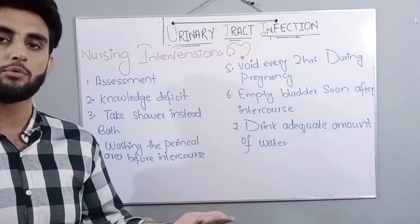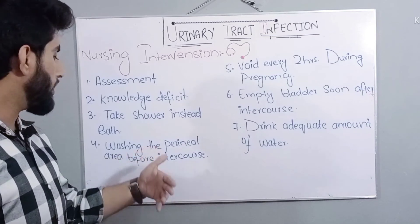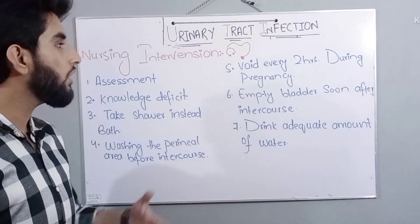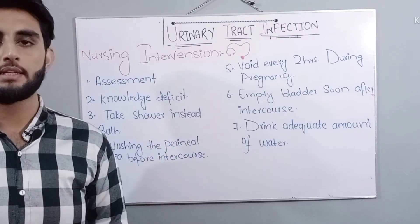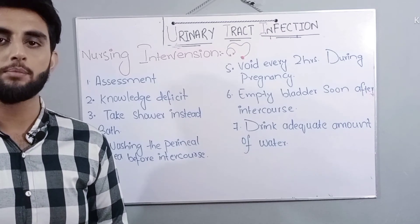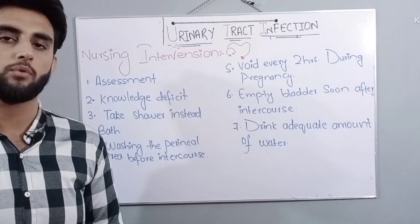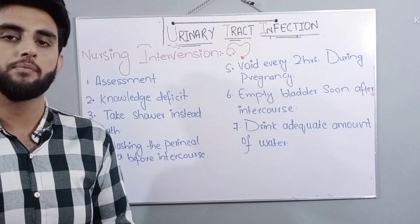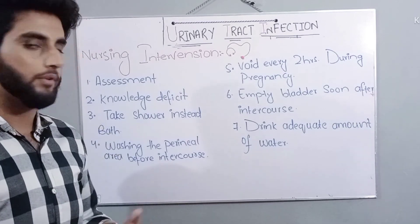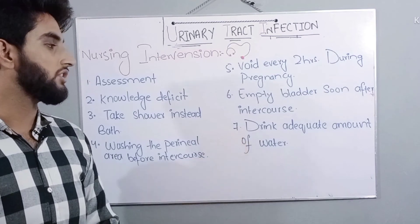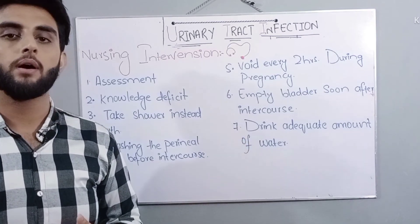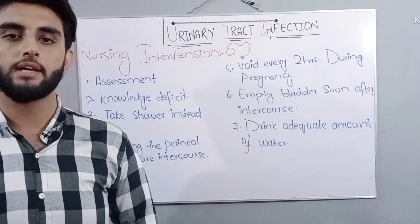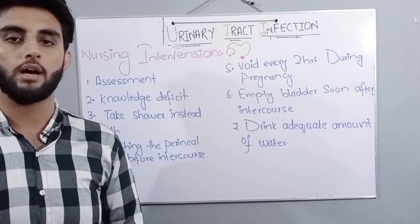Preventive measures include taking a shower instead of a bath, washing the perineal area before intercourse, voiding every 2 hours especially during pregnancy to avoid bladder over-distension, emptying the bladder after intercourse, trying to pass urine after urinary urge, and drinking an adequate amount of water daily so that the urinary tract is kept clear and bacterial infection cannot grow.